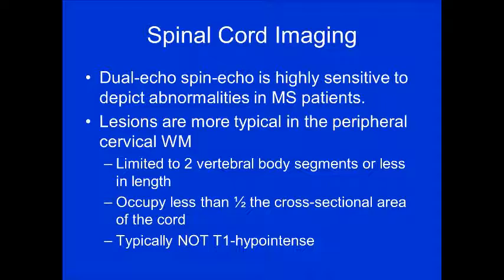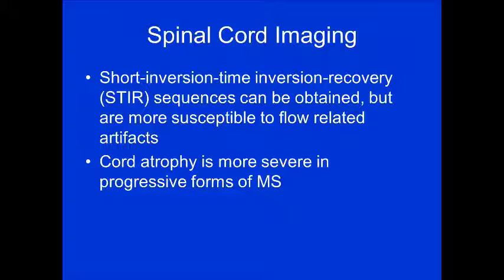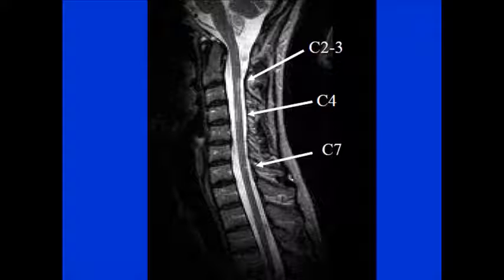If you look at the brain and see nothing but the ordering physician still suspects MS, look at the spinal cord. Typically you use dual echo or spin echo, which is highly sensitive. Lesions are more typical in the peripheral cervical white matter, limited to two vertebral body lengths or less, and tend to occupy less than half the cross-sectional area of the cord. Unlike black holes in the brain, spinal cord lesions are typically not T1 hypointense. STIR can also be used, though flow-related artifacts can limit evaluation. Cord atrophy suggests a more progressive form of MS.